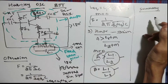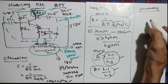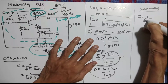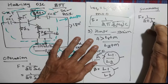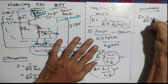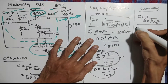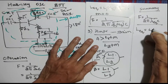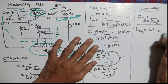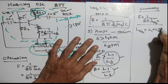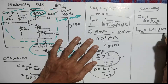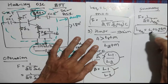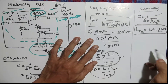You can summarize the Hartley oscillator very easily. The frequency is equal to 1 divided by 2 pi root of L equivalent into C. There are two types of L equivalent: one is L1 plus L2 as usual, and if mutual inductance is present, it becomes L1 plus L2 plus 2M. If M is not given, M is zero, then only take L1 plus L2.